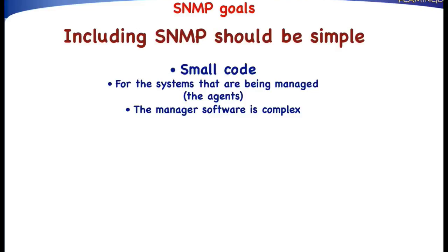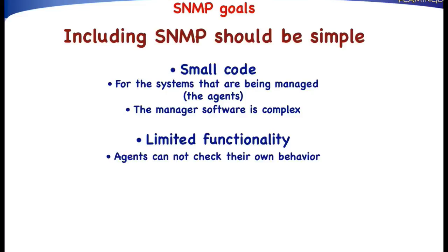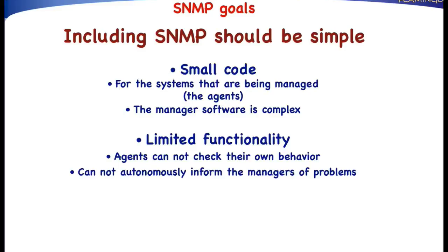Another consequence of the fact that SNMP is simple is that agents have limited functionality. For example, an agent is not able to check its own behavior. Therefore, if something goes wrong, it cannot, in an autonomic fashion, inform the manager of problems. This is quite different from OSI management, where agents had far more functionality. In the case of OSI management, it was possible that an agent autonomically informed the manager in case something went wrong. With SNMP, this is not possible.